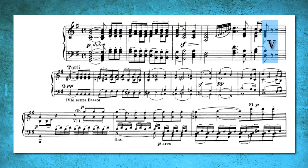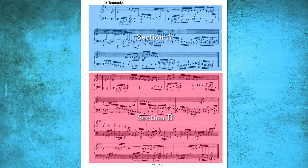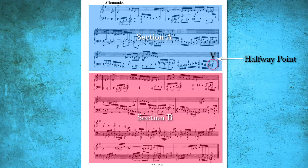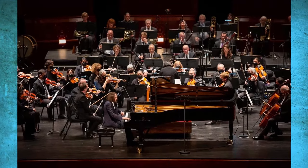The term half cadence originates from binary musical form, where the conclusion of the first section often lands on a five chord, leaving the first section unresolved, thus allowing the natural flow into the second section from the five chord.